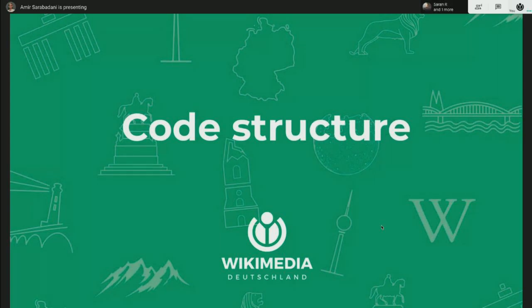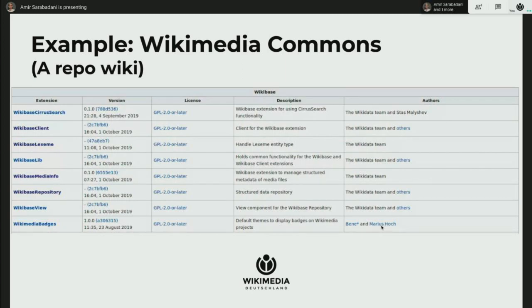Now let's dive into the code structure. Wikibase is not a single extension — it's several extensions. For a repo, you enable several extensions like Wikibase Repository and Wikibase Client, because the client can also be a repository. Wikibase View is also an extension of Wikibase Repository. A repository also has a view. MediaInfo is dedicated to Commons and is not enabled anywhere else. Wikibase ElasticSearch is the thing that enables search in a better way. Lib is the extension shared between client and repo for the sake of having shared code between the two.